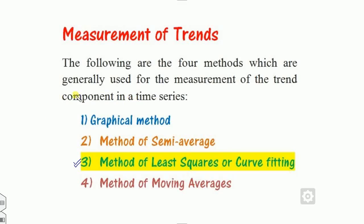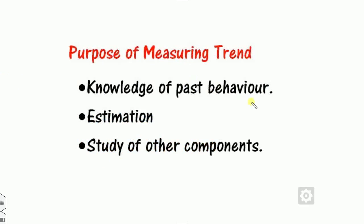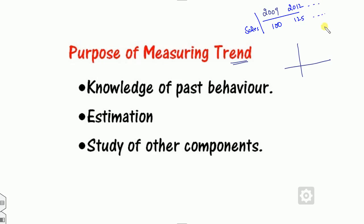The first question is: why we need the method of least squares or method of semi-average, why we need this measurement of the trend? The trend means the behavior of the information. For example in the year 2009 the sale of some product is 100 units, in 2012 the sale is 125, and so on. If you want to measure what the sale will be in the year 2021, that is the measurement and that is the trend. The first information we need is the past behavior; once we know the past behavior we can estimate the values.